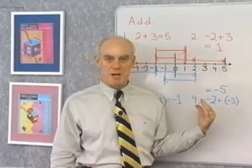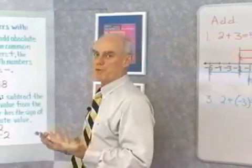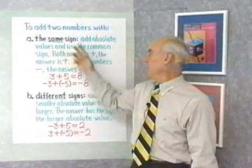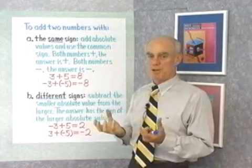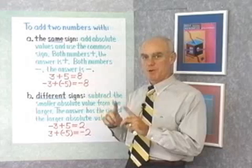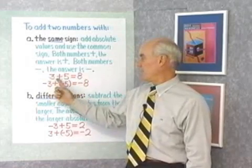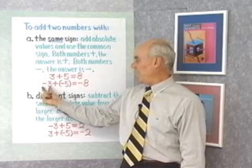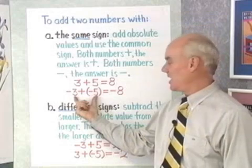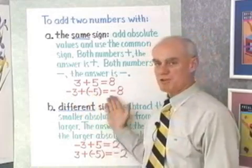If we were to do a whole bunch of problems like this on the number line, we would see that they follow a certain pattern. That pattern is summarized in the rule for adding positive and negative numbers. To add two numbers with the same sign, we simply add their absolute values — forget about the sign part, just add the number parts — and use the common sign. If both numbers are positive, the answer is positive. If both are negative, the answer is negative. For instance, 3 plus 5 is 8. And negative 3 plus negative 5: add absolute values to get 8, use the common negative sign, so the answer is negative 8.